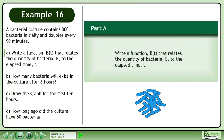A bacterial culture contains 800 bacteria initially and doubles every 90 minutes. In Part A, write a function b that relates the quantity of bacteria b to the elapsed time t.